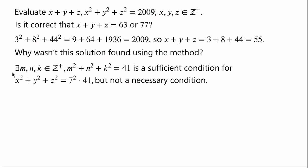Because requiring that there exist positive integers m, n, k such that m squared plus n squared plus k squared equals 41 is a sufficient condition for x squared plus y squared plus z squared equals 7 squared times 41, but not the necessary condition.